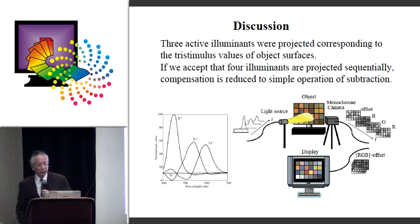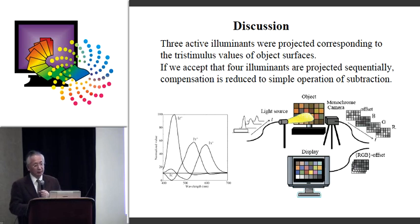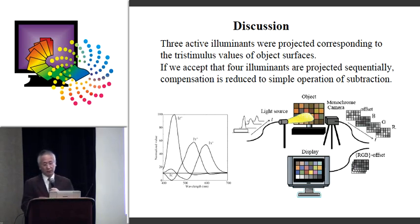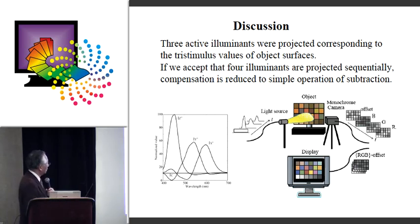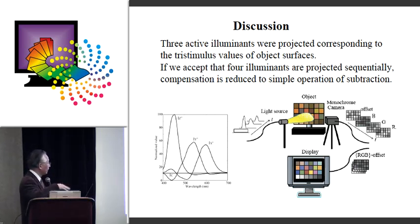For discussion: the system we proposed supports three active illuminants projected corresponding to the tristimulus values of the projected surface. However, if we accept four illuminants projected, then the approximation error can be reduced. This is a simple operation of sub-illuminant. Here is the principle: we take all the illuminant spectral curves upward to make all values positive, by adding a constant spectrum.